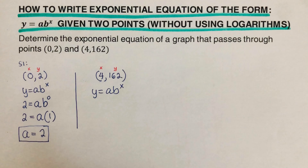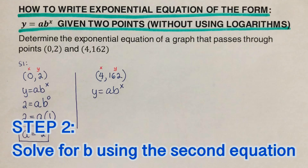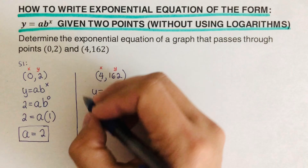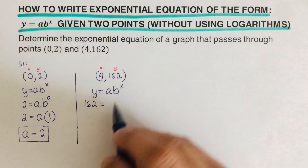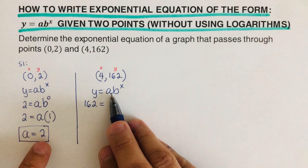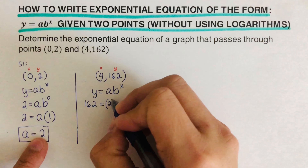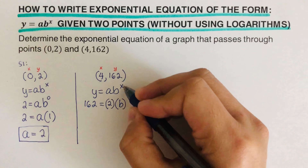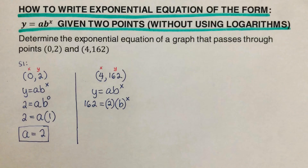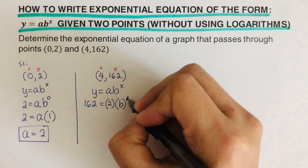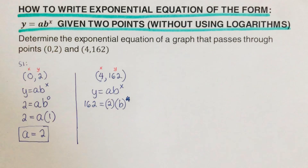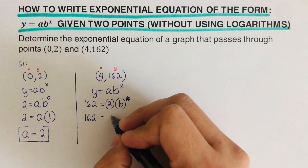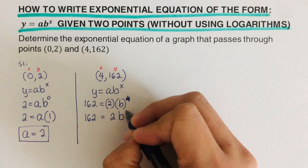Step two is to solve for b using the second equation, since we already have a. Our y is 162, and our a is 2. I plug those in: 162 equals 2 times b raised to the power x. Our x from the second point is 4, so this becomes 162 equals 2 times b raised to the fourth power.